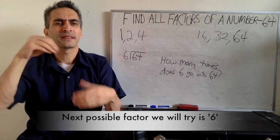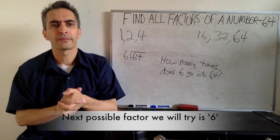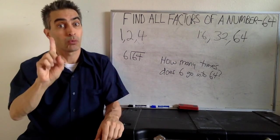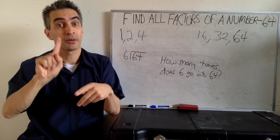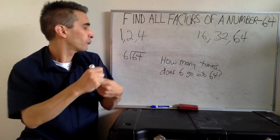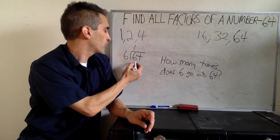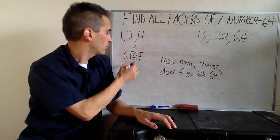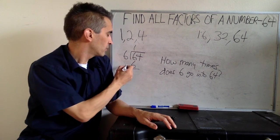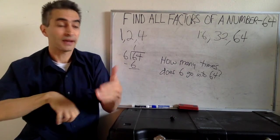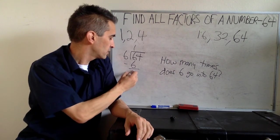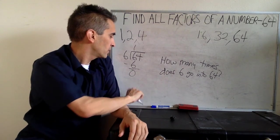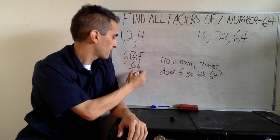Next, we're going to try 6. How many times does 6 go into 64? 6 goes into 6 once. 1 times 6 is 6. Now we're going to subtract. 6 minus 6 is 0. Bring down the 4.